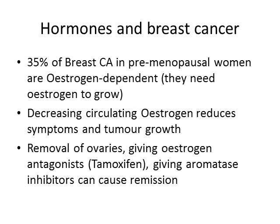Up to 35% of breast cancers in premenopausal women are estrogen dependent — in other words, they need estrogen to grow. If you decrease the circulating estrogen, you can often reduce the symptoms of cancer and reduce tumor growth. This leads to various treatment modalities for these hormone-sensitive cancers: you can consider removing the ovaries, giving estrogen antagonists like tamoxifen, or giving aromatase inhibitors to prevent the production of estrogen, as part of adjunct treatment for breast cancer.